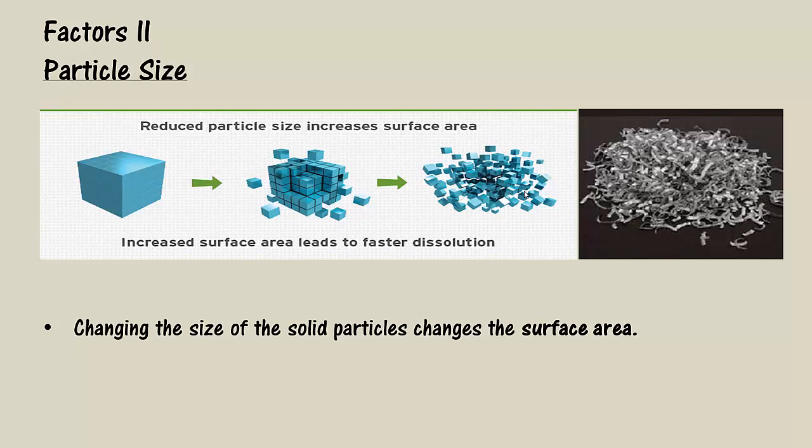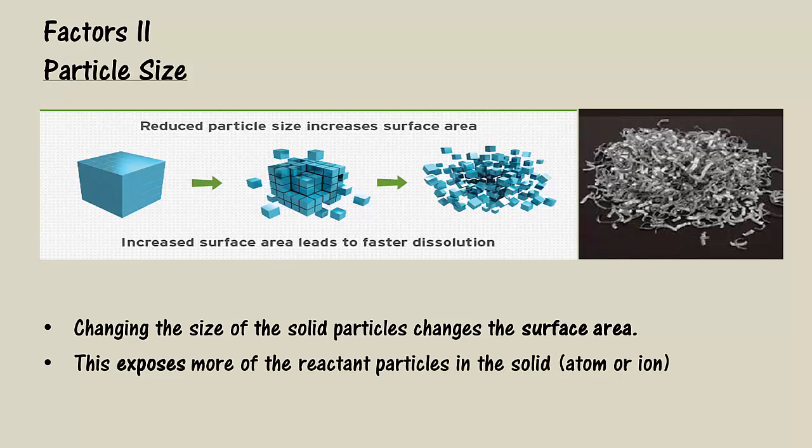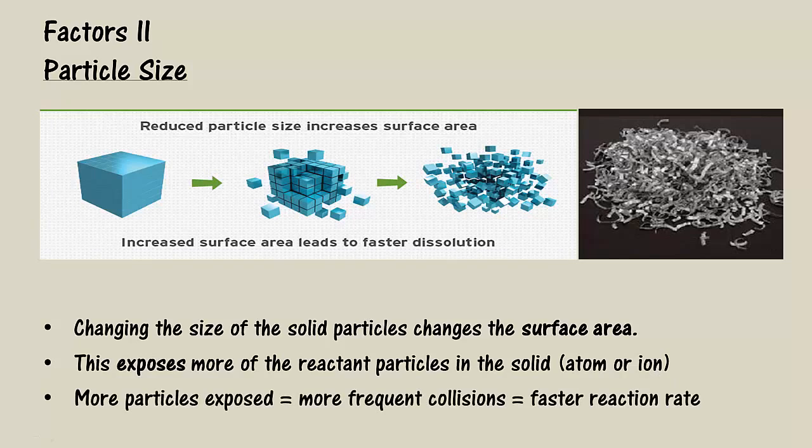So increasing the surface area of your solid reactant exposes more of the particles from the reactant to the other reactant, typically your acid or something. So if you're using something like magnesium metal, then you're going to be exposing atoms of magnesium to your acid, or if you're doing a reaction with an ionic compound like sodium carbonate, you'll be exposing more of your ions, in this case your carbonate ions. With more particles exposed, there will be more frequent collisions and a faster reaction rate. This is why powdered substances like flour and coal dust are highly combustible and potentially explosive.